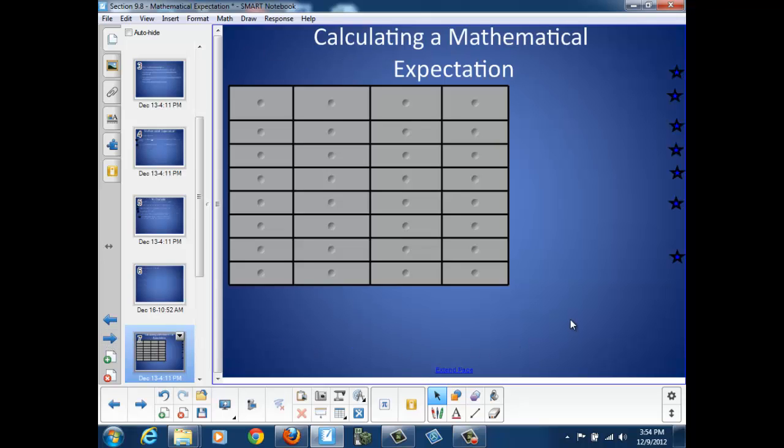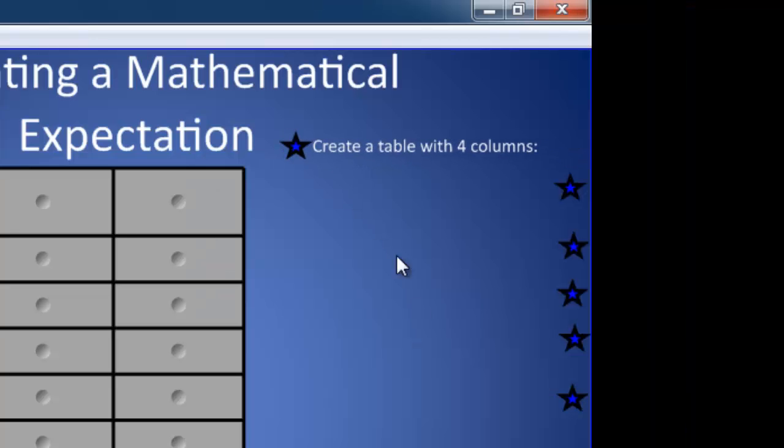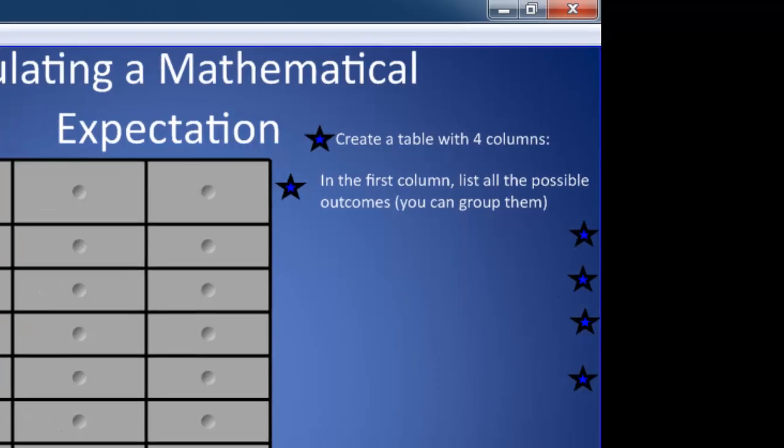Let's take a look at how we would decide the answer to this question by calculating a mathematical expectation. These are the steps we will take for any mathematical expectation problem. First, we'll create a table with 4 columns, just like I've done here. In the first column, we'll list all the possible outcomes. You can group them if there are a lot of outcomes.